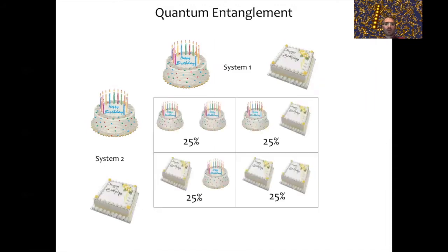We have these two systems, these two cakes, and we are going to prepare them in a certain quantum state. That state will be such that there is an equal probability of 25 percent for all possible outcomes. Because we have two cakes, there are four possibilities: they could either both be round cakes, or they could both be square cakes, or they could have different shapes. The probability is the same for each of these outcomes.